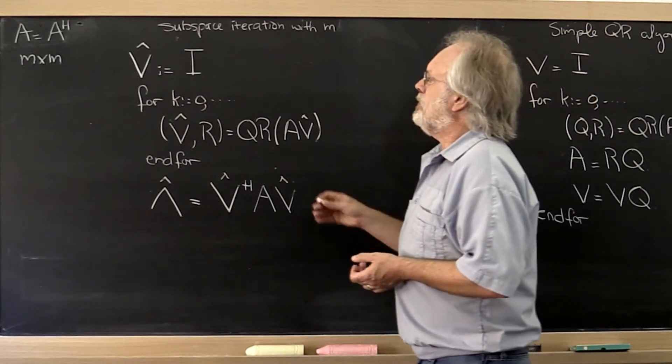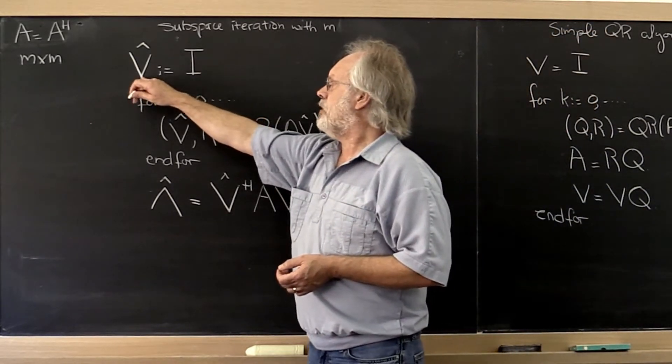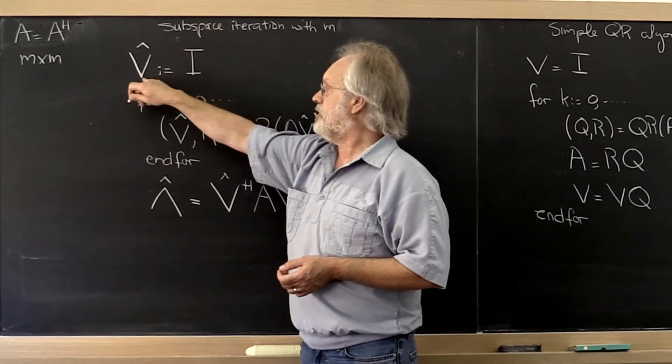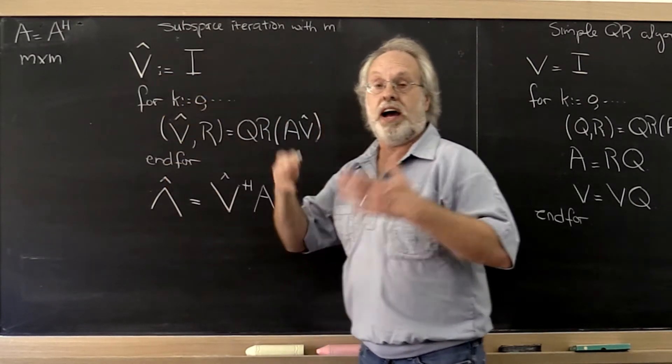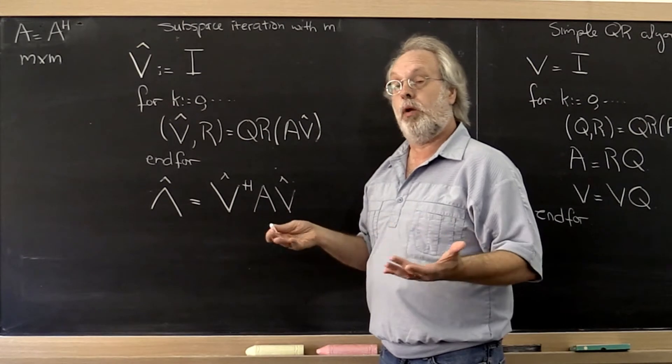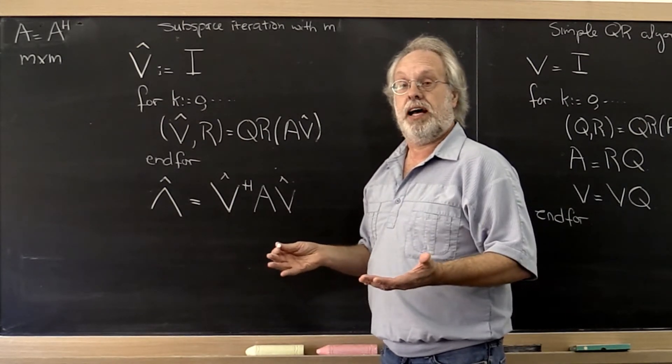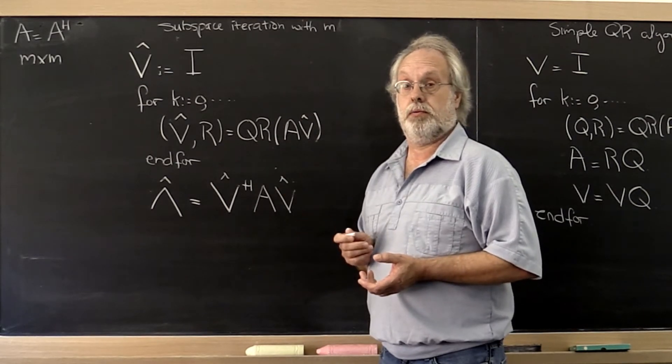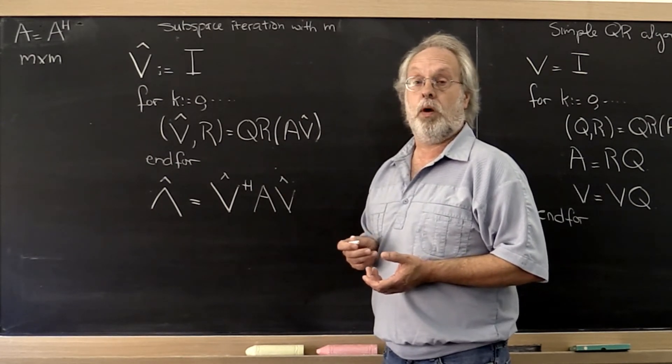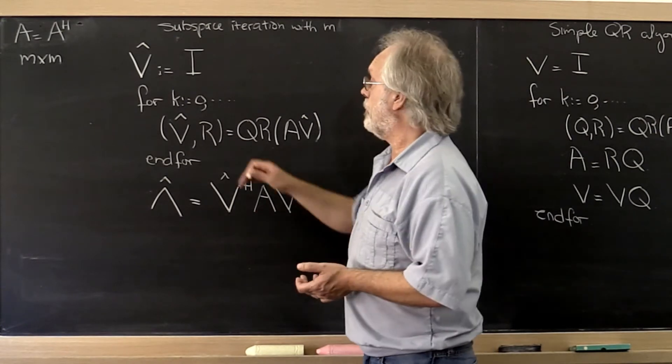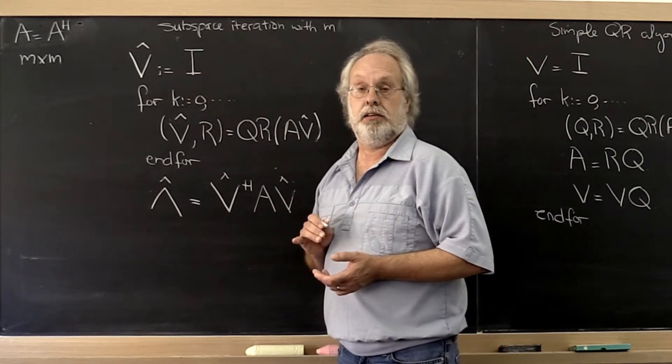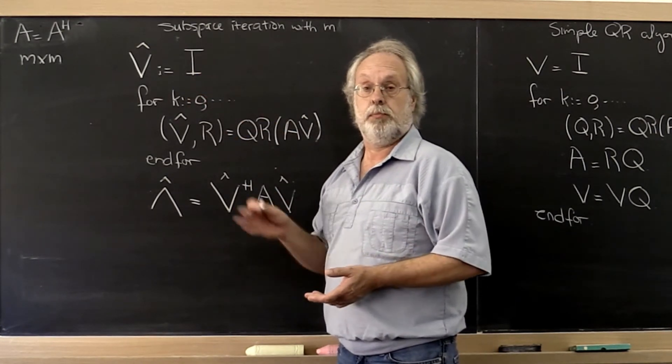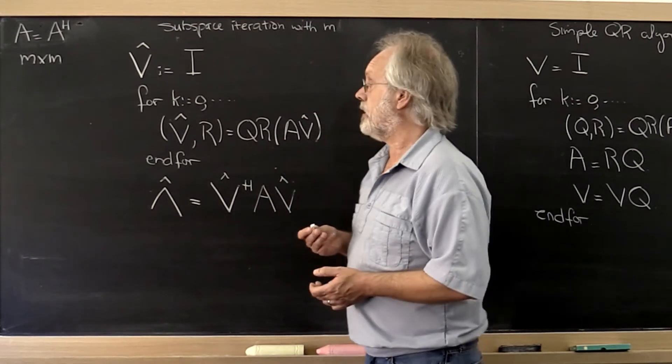Well, we started with a matrix that was some random matrix. But really what we wanted was to start with a matrix that had mutually orthonormal columns. And what simpler matrix to start with than simply the identity? It has the desired mutually orthonormal columns.